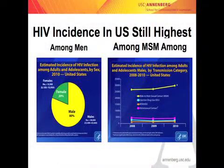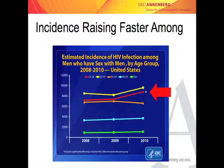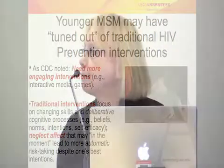HIV incidence is still highest among MSM, and it's really the youngest guys that we have to worry the most about. Younger MSM may have tuned out of traditional HIV prevention interventions, and the CDC suggested we should have more engaging interventions for them. Traditional interventions have focused on changing skills in deliberative cognitive processes such as beliefs, norms, intentions, and self-efficacy. But our early formative research — extensive interviews — suggested we were really neglecting affect, and what happens in the moment that may lead to more automatic risk-taking, despite one's best intentions, was being overlooked.